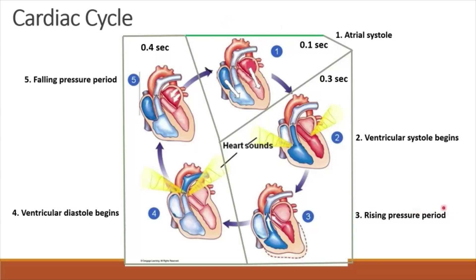The third phase is the rising pressure period. The pressure within the ventricles is higher than the pressure within the pulmonary artery and aorta. The pulmonary semilunar valve and aortic semilunar valves open, and blood is pushed from the ventricles into the pulmonary artery and aorta. The second and third phases together are about 0.3 second.